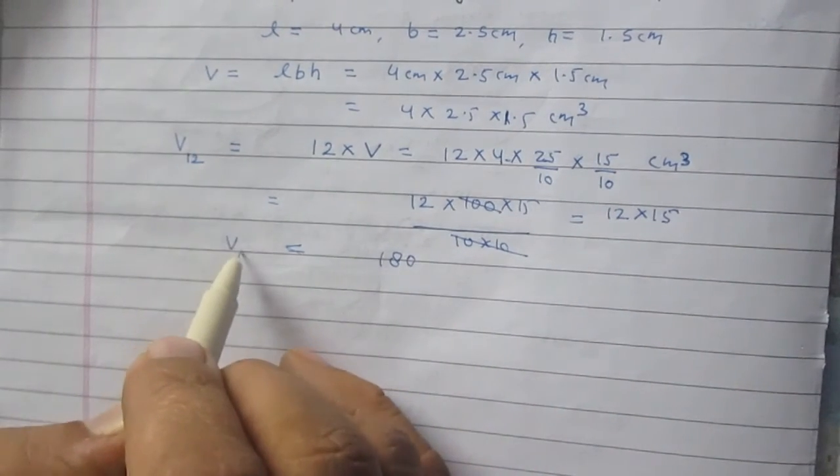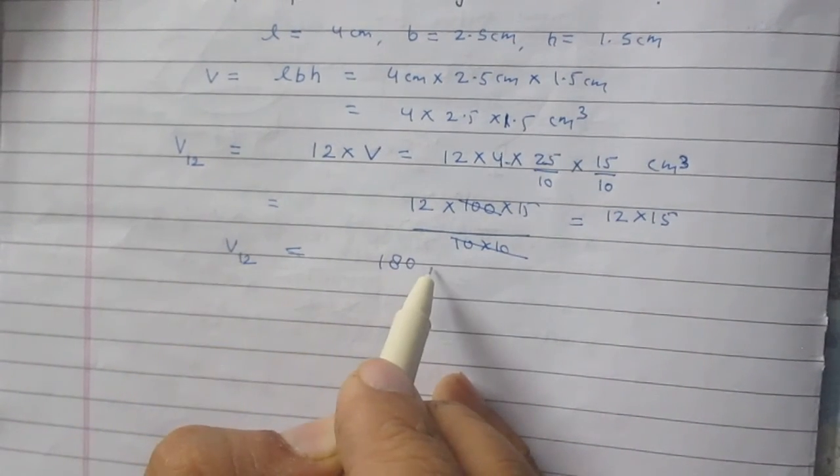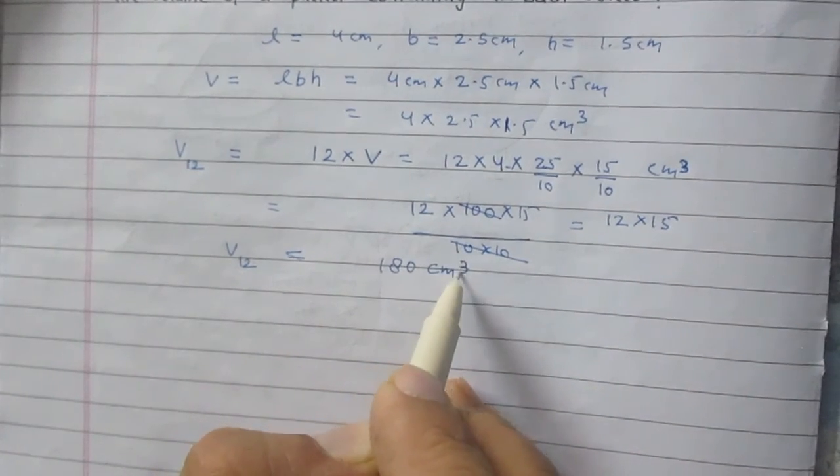So volume of 12 such matchboxes is 180 cm cube.